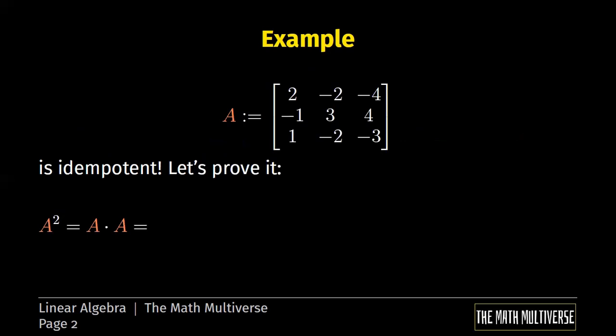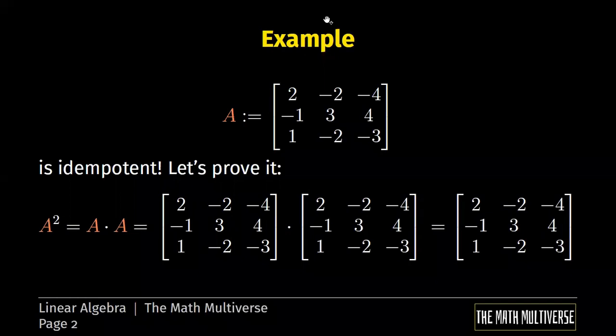There are nine row column products to perform, as we already studied. Let's just verify the computation for a couple of entries. Let's check for example this first element, the number 2. This is obtained as follows.